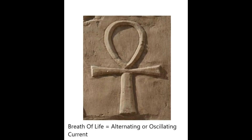You could perceive the Ankh symbol as a loop sitting on top of a capital T. Loop oscillators are considered the most versatile type of oscillators for communication systems. They can generate a wide range of frequencies from a single reference frequency — this is essential in communication systems where multiple channels or frequencies are needed. They offer excellent frequency stability, which is crucial for maintaining signal integrity. They can reduce phase noise and jitter, improving the quality of transmitted and received signals.